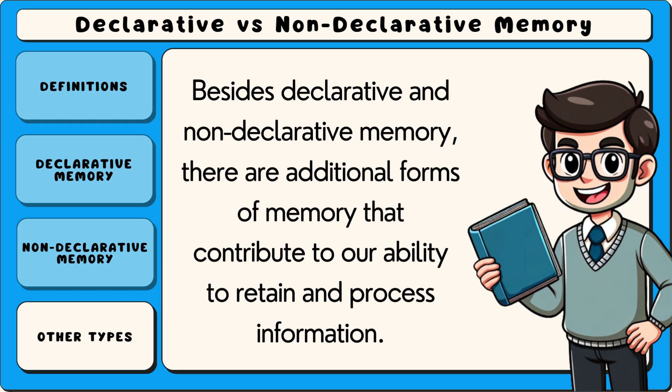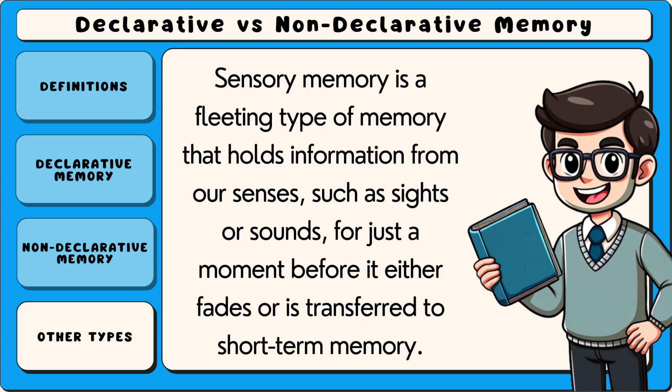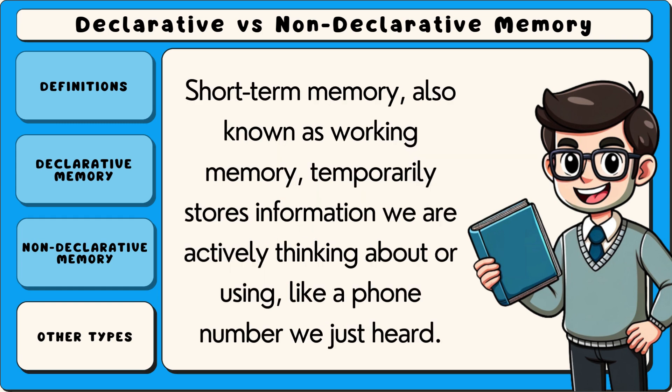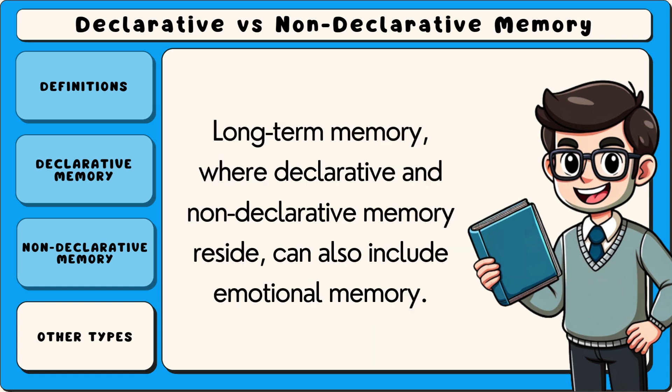Besides declarative and non-declarative memory, there are additional forms of memory that contribute to our ability to retain and process information. Sensory memory is a fleeting type of memory that holds information from our senses, such as sights or sounds, for just a moment before it either fades or is transferred to short-term memory. Short-term memory, also known as working memory, temporarily stores information we are actively thinking about or using, like a phone number we just heard. Long-term memory, where declarative and non-declarative memory reside, can also include emotional memory.